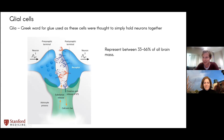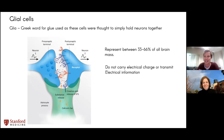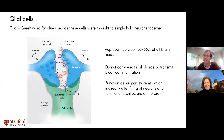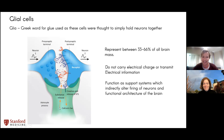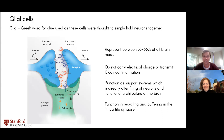Glia don't actually carry electrical information per se. What they do is serve to support synaptic areas and the functions of neurons that they mesh around. With regard to this type of glia in the tripartite synapse, these astrocytes usually serve to recycle and buffer certain molecules that land in the synapse, helping to balance out the connections between two neurons. These are very common in the mammalian brain.